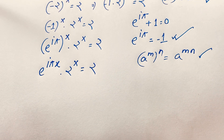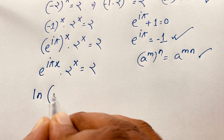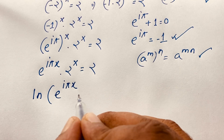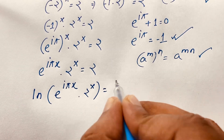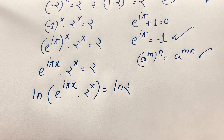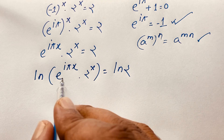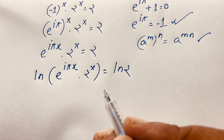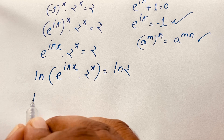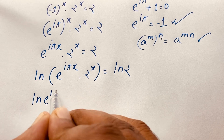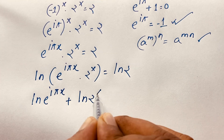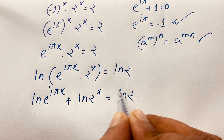Now I apply natural log to both sides: ln(e^(iπx) × 2^x) = ln 2. Using the log product rule ln(ab) = ln a + ln b, this expression becomes ln(e^(iπx)) + ln(2^x) = ln 2.